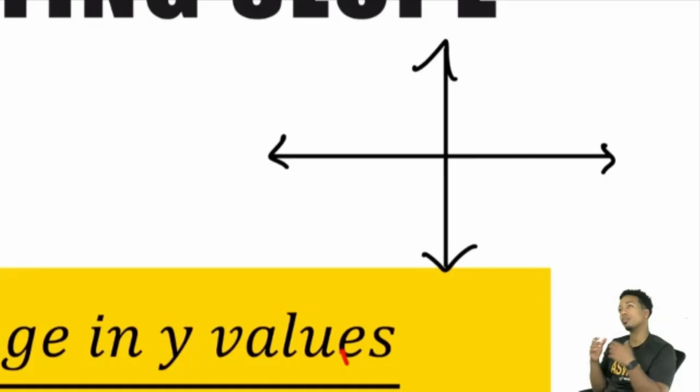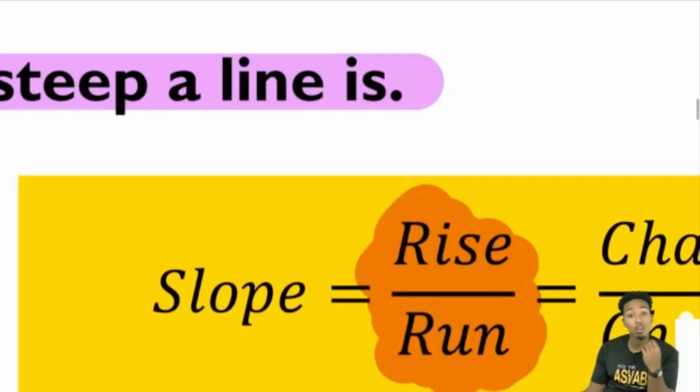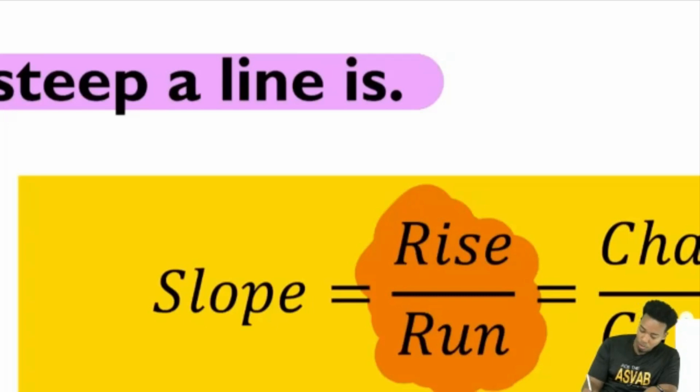When you think about rise over run — which axis goes up and down? If you're rising or falling, which axis is that? That's the y-axis. So when they're talking about the rise, they're talking about the y-axis, the vertical one.